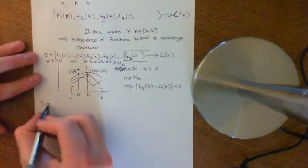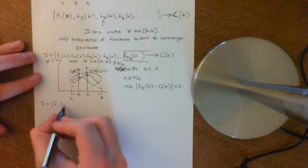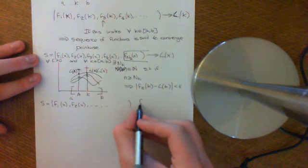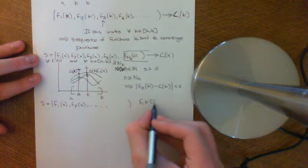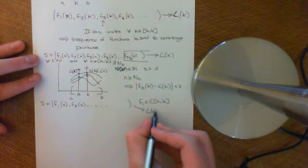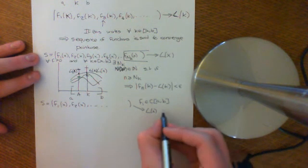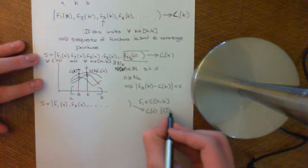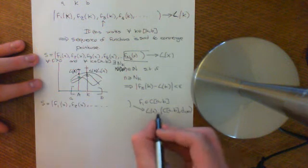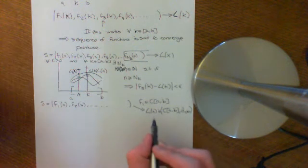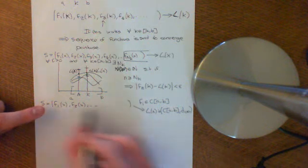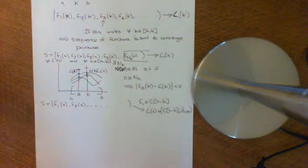Here is our sequence S, which is a sequence of continuous functions F1(x), F2(x), etc. So F_i are all elements of C(A,B), and we are saying that this sequence converges to a limit function L(x) in the metric space C(A,B) with the D-infinity metric, i.e. the supremum metric. What we want to see is that this implies the sequence converges pointwise to L(x).